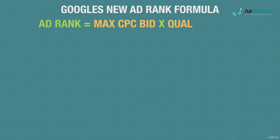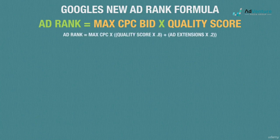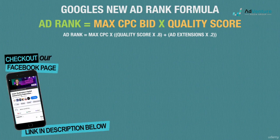The new formula for ad rank that Google introduced in 2005 was: ad rank equals max CPC bid times quality score. That formula stayed until 2013, when Google introduced the expected impact of ad extensions on CTR as part of the ad rank formula. Brad Geddes of Certify Knowledge proposes that ad extensions account for about 20% of the quality score portion of the current ad rank formula.